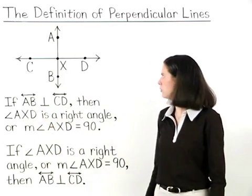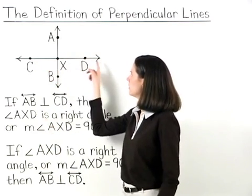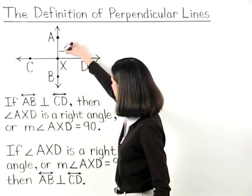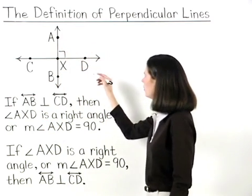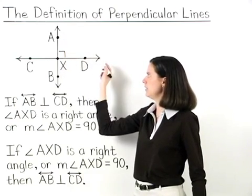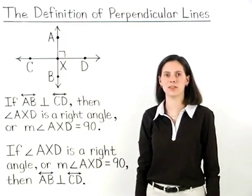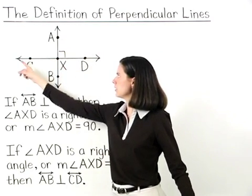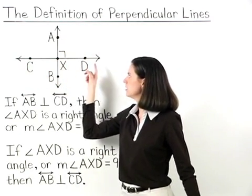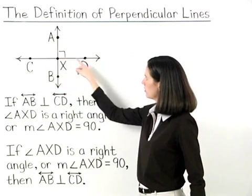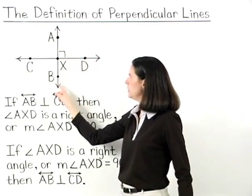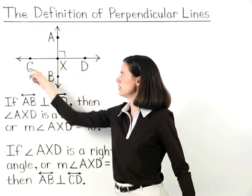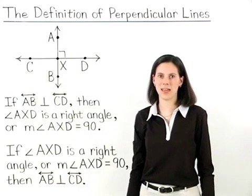So if these two lines are perpendicular, then we can put a box at the vertex of angle AXD, which tells us that angle AXD is a right angle. And if line AB is perpendicular to line CD, then angle BXD, angle BXC, and angle AXC are also right angles.